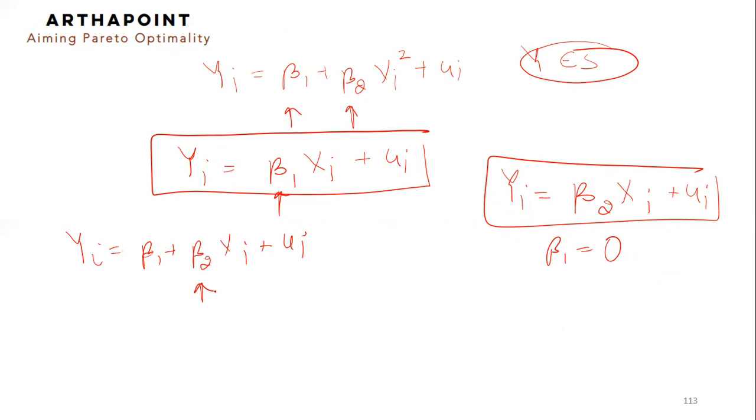Our beta 2 has always been, when x changes by one unit, y changes by beta 2 units.